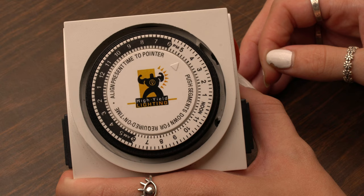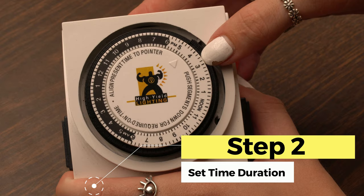Next you're going to want to decide how long you want your lights on for. So depending on how many of these you push down is how long the timer is going to be on for.